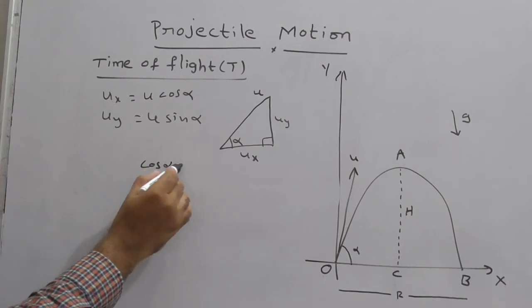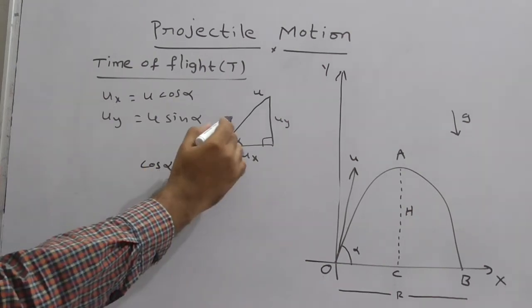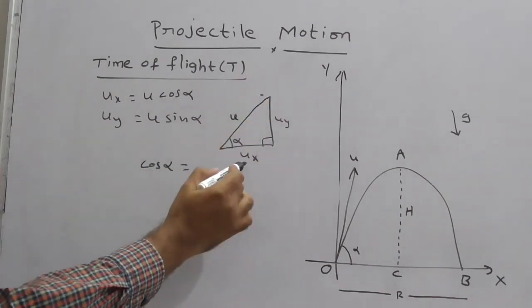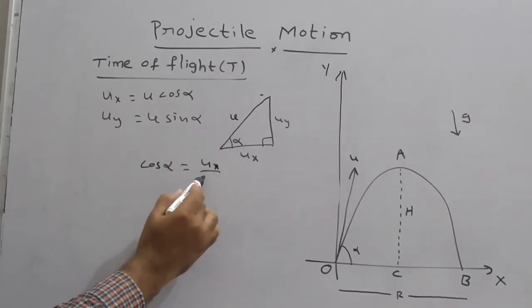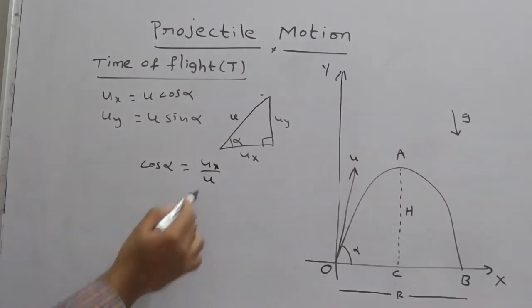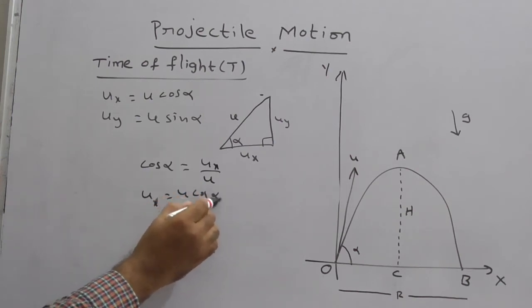From here you can write cos alpha is equal to—so this line is u. What is cos alpha? Very good. That is adjacent by hypotenuse, ux by u. Therefore, ux gives u cos alpha.